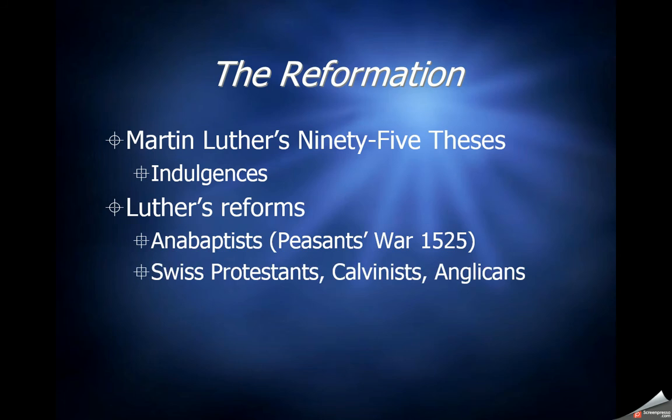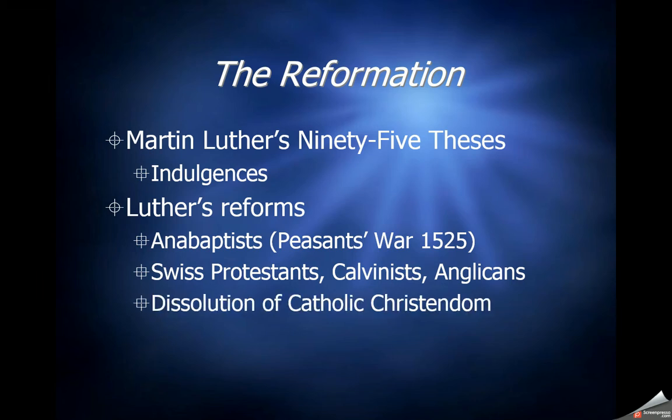Besides the Anabaptists, there were the Swiss Protestant movements started by people like John Calvin. Churches like the Presbyterian Church today are the result of John Calvin. Then there were the Anglicans — an English form of the Catholic Church, only Protestant, retaining many Catholic practices. This results in the dissolution of Catholic Christendom: rather than Catholics being the only game in town, other churches begin to spring up as a result of these abuses.